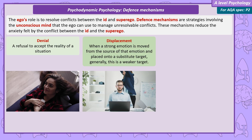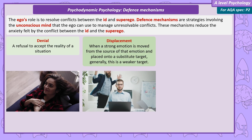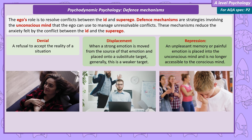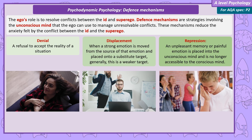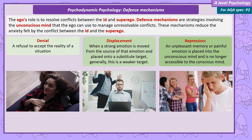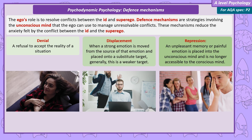An example of displacement would be a worker whose boss shouts at them at work. The anger they feel towards their boss can't be expressed to the boss, so it's displaced to a weaker target — perhaps they go home and shout at their wife, who then displaces her anger onto her children. Repression is when an unpleasant memory or painful emotion is placed into the unconscious mind and is no longer accessible to the conscious mind — for example, someone who was bullied at school being unable to recall memories of being bullied.